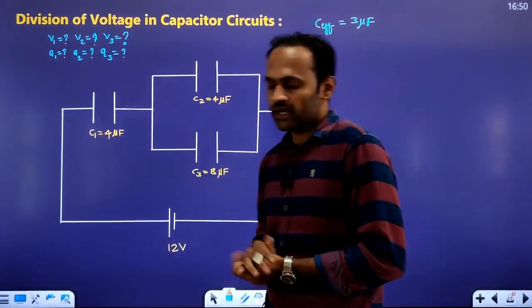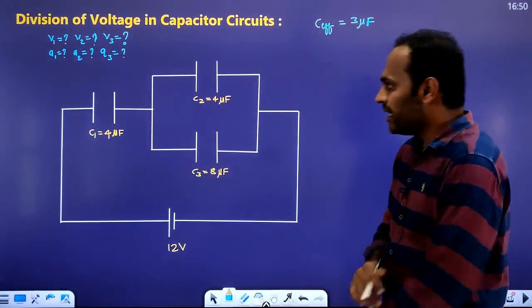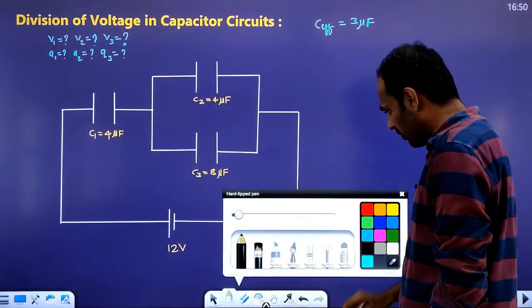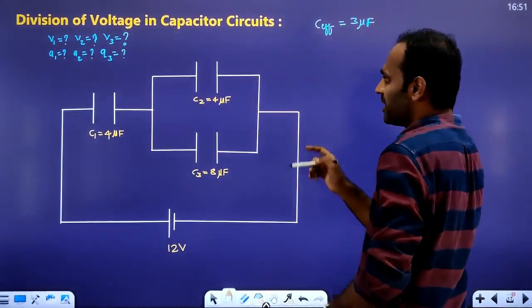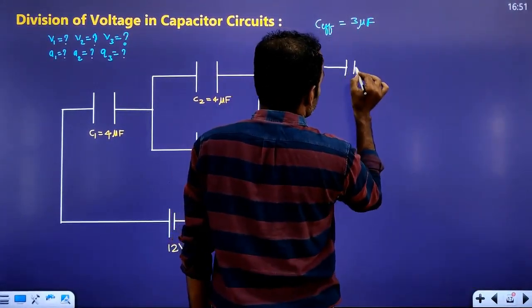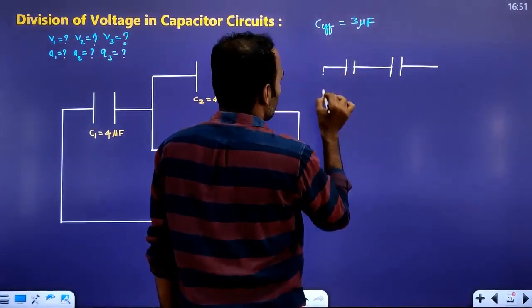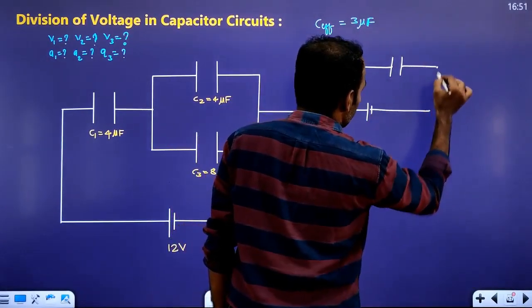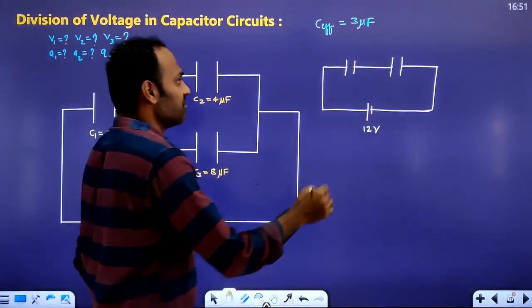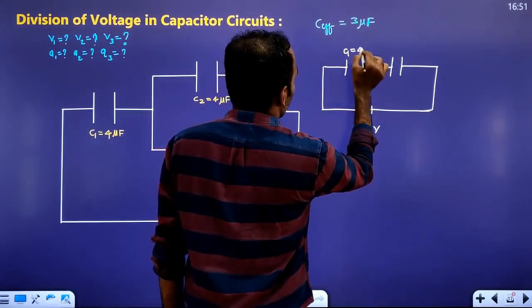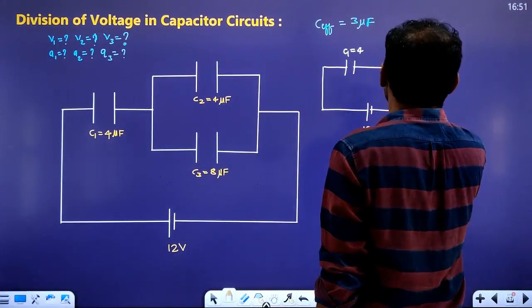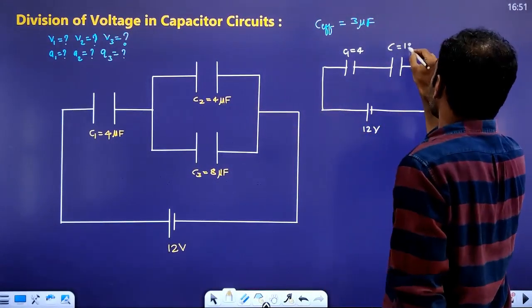Now we will understand the division of voltage. We apply 12 volt potential difference to the circuit. The main capacitor C1 is 4 microfarad, C2 is 4 microfarad, and the parallel combination is 12 microfarad capacitance.